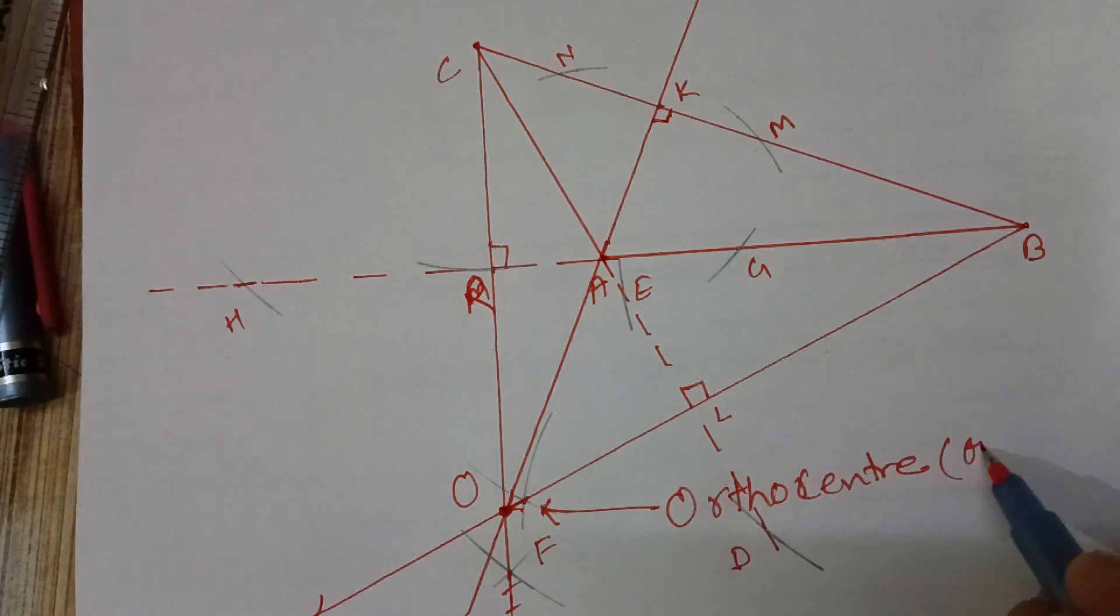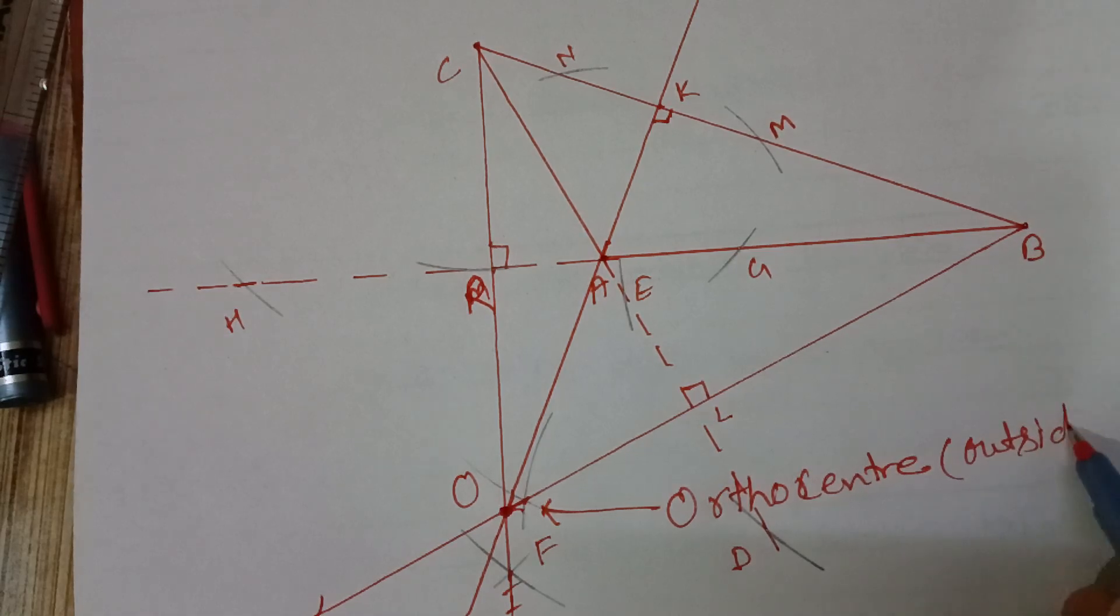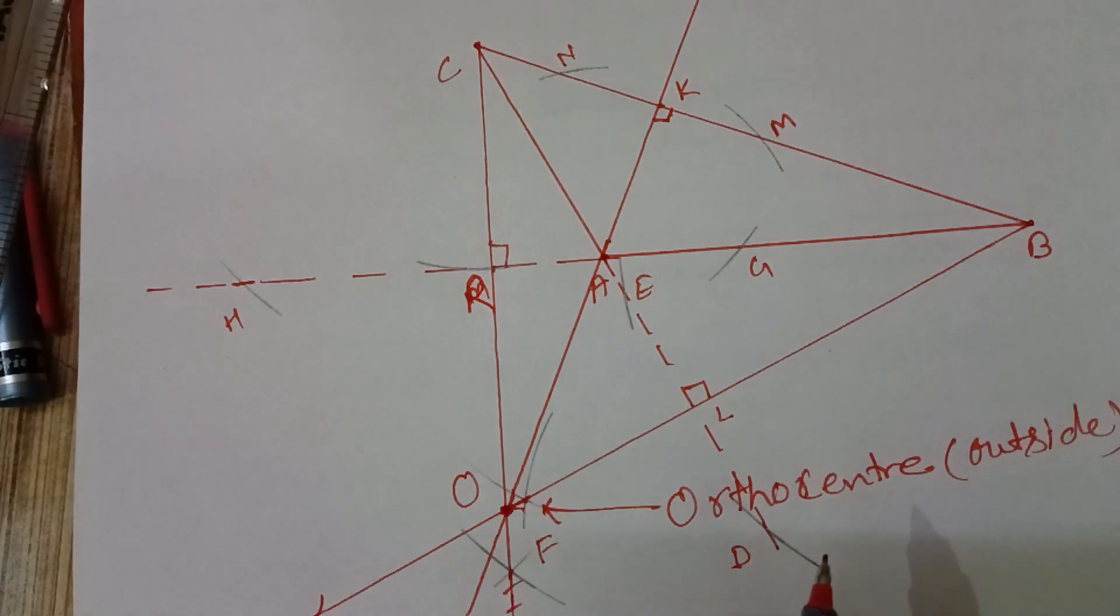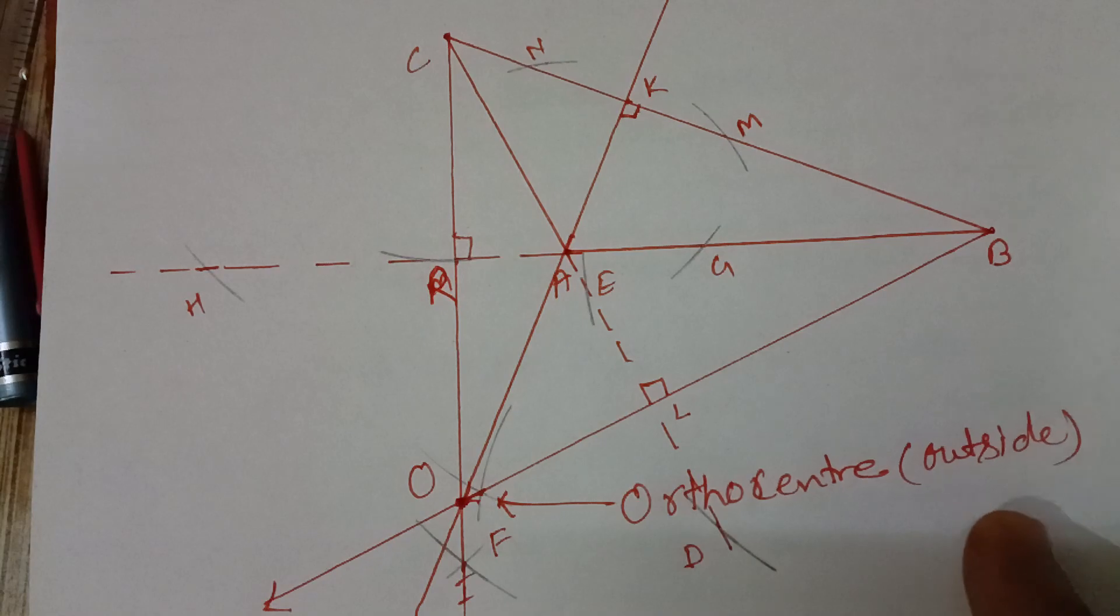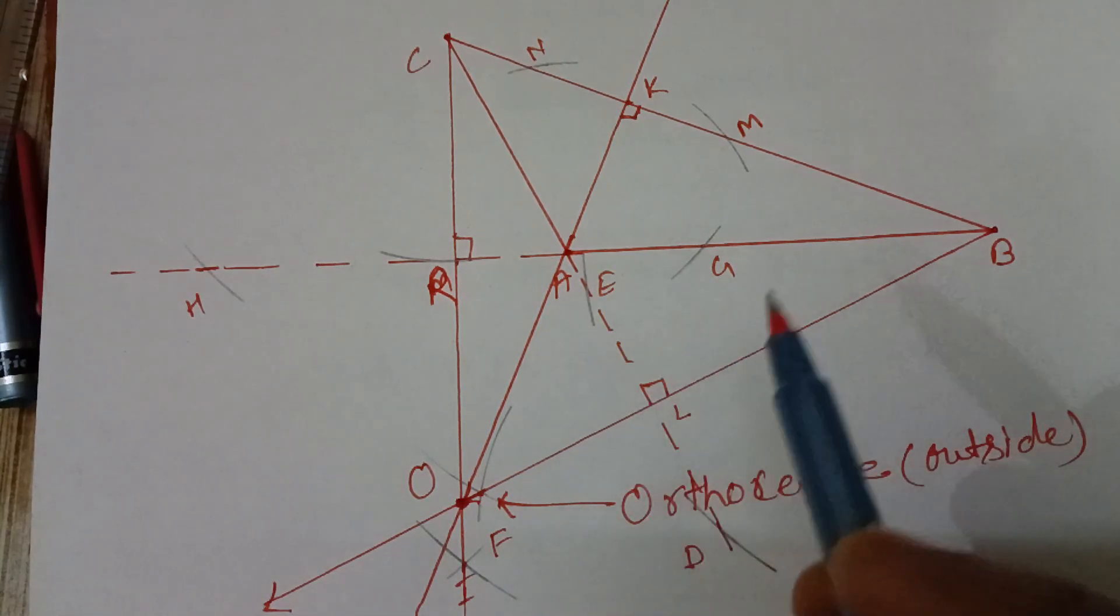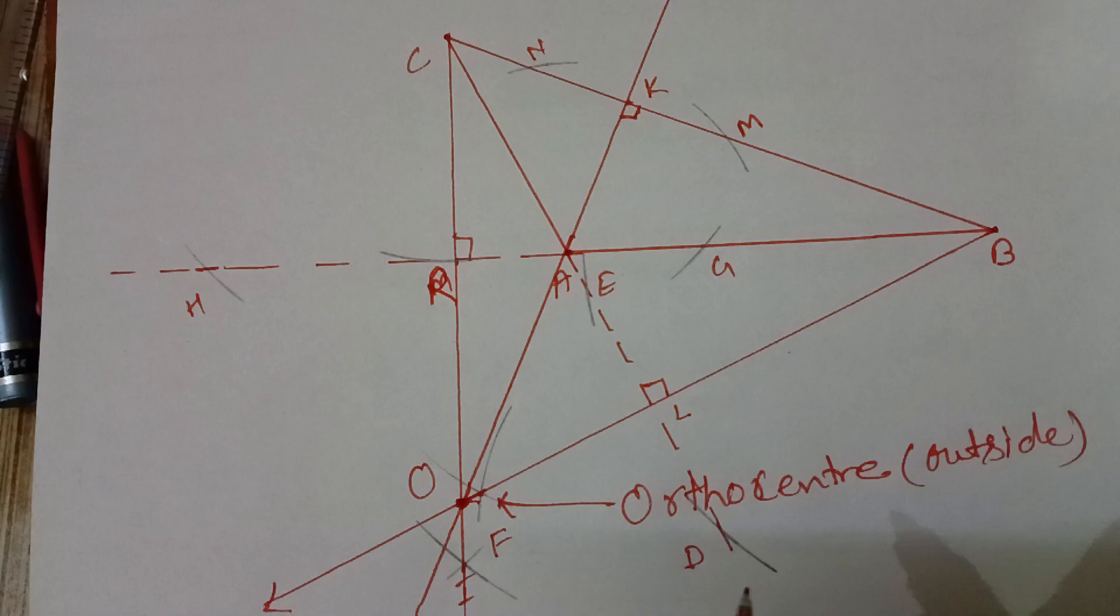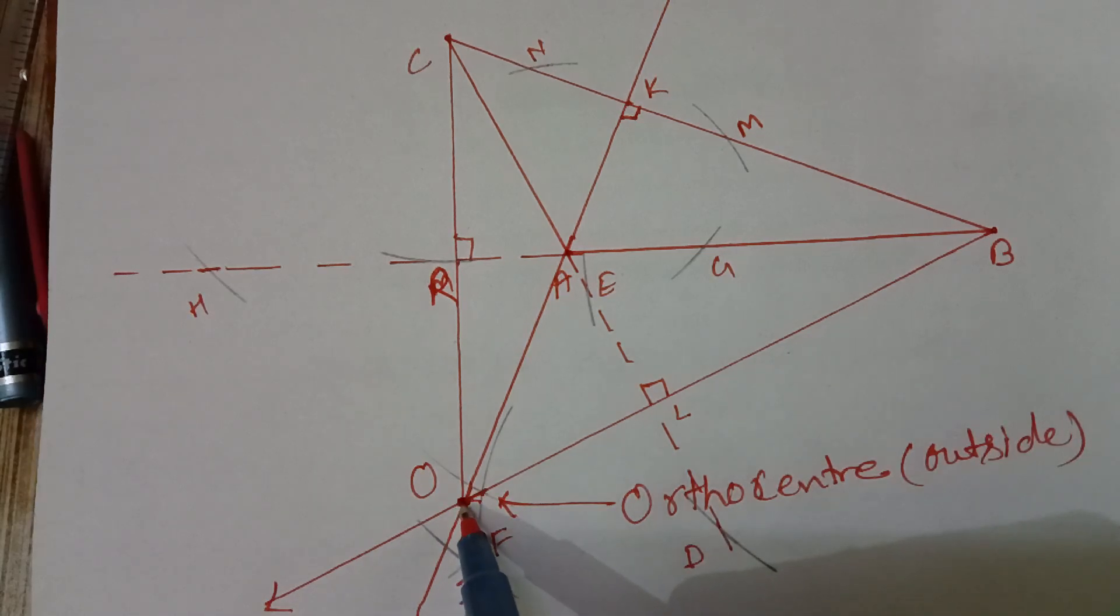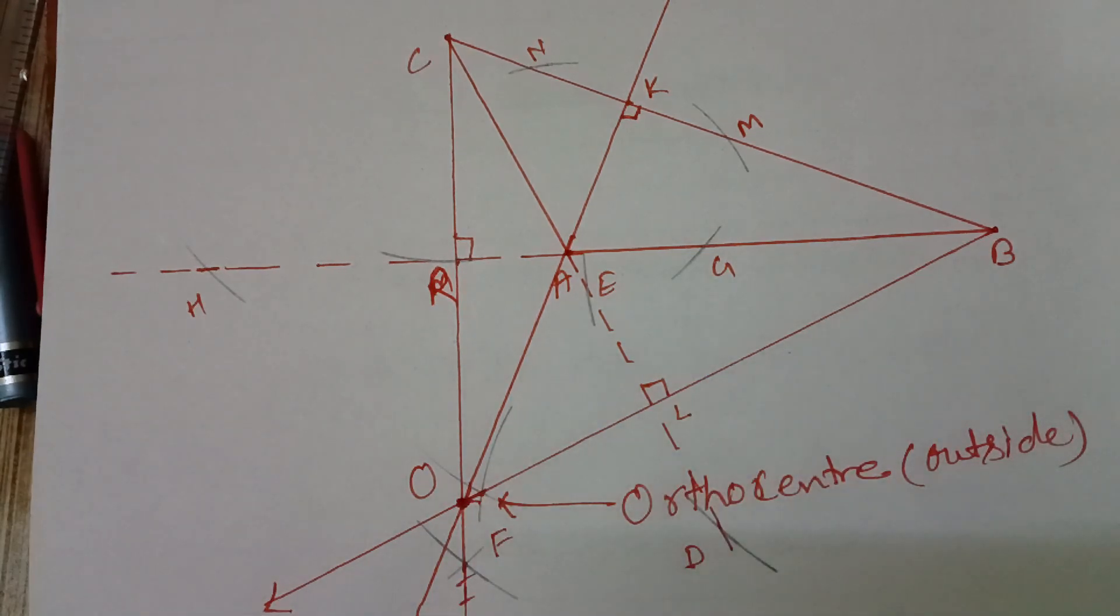And this is outside from the triangle. In a scalene triangle, orthocenter is inside the triangle. But in obtuse angle triangle, the orthocenter is outside the triangle. Thank you.